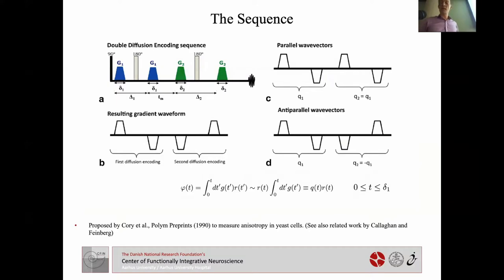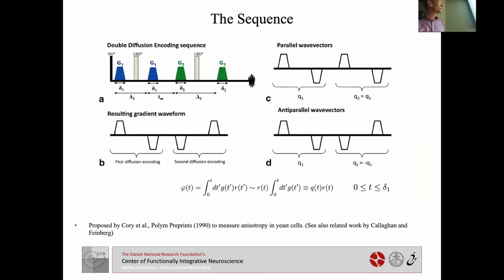The basic sequence I'm interested in is the double diffusion encoding sequence. As the name implies, it's simply two back-to-back spin echo versions of a standard Stejskal-Tanner diffusion encoding pulse. The idea is that you have a lot of extra degrees of freedom with which you can probe the tissue microstructure — normal pulse widths and diffusion time, but a pair of each, one for each diffusion encoding block.